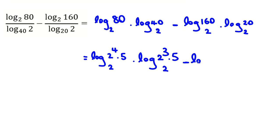Minus log base 2 of 160, which is 32 times 5, which we can say is 2 to the 5 times 5, times log base 2 of 20, which is 4 times 5, which is 2 squared times 5.